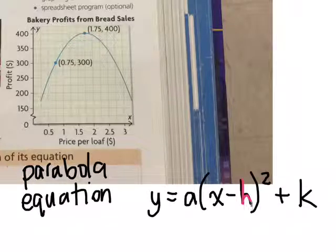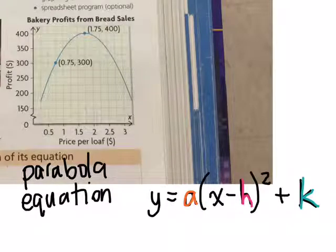We need to know h and k, good. And is there anything else we need to know to fill in our equation? a. So in order to come up with this equation, we have to know a, we have to know h, and we have to know k.